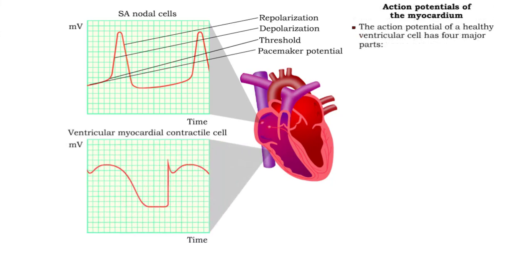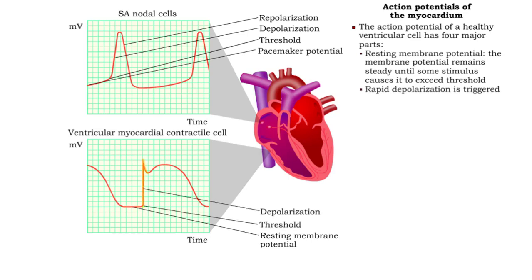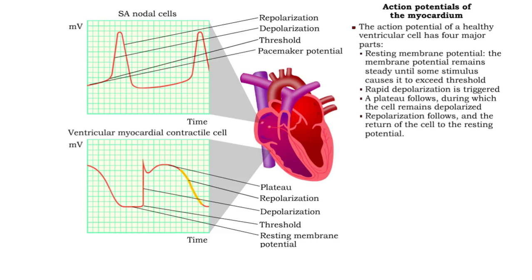In ventricular cells, an action potential has four stages. The resting membrane potential is steady until a stimulus causes it to exceed threshold, triggering rapid depolarization, which is followed by the plateau, during which the cell remains depolarized. The plateau is followed by repolarization, after which the cell returns to the resting potential.